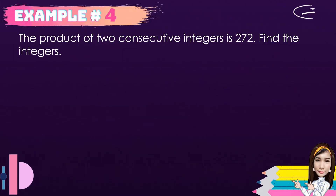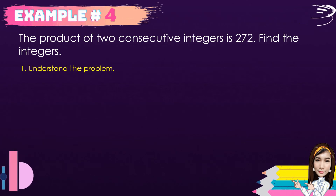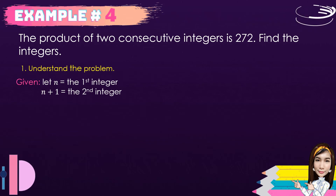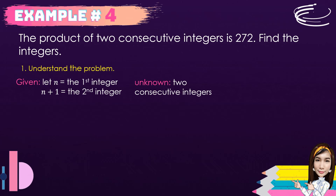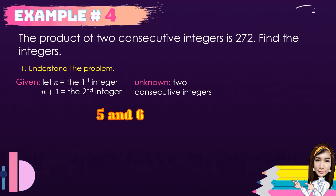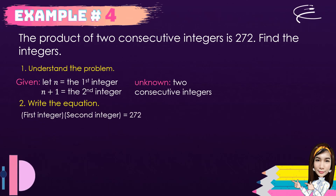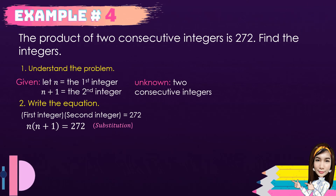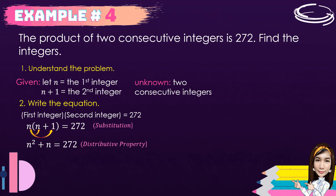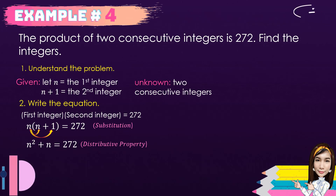For example number 4: the product of two consecutive integers is 272. Find the integers. First, let n be the first integer and n + 1 be the second. Consecutive integers are like 1 and 2, 3 and 4, 5 and 6, 7 and 8. Second, write the equation: n(n + 1) = 272. Using the distributive property, we get n² + n = 272.